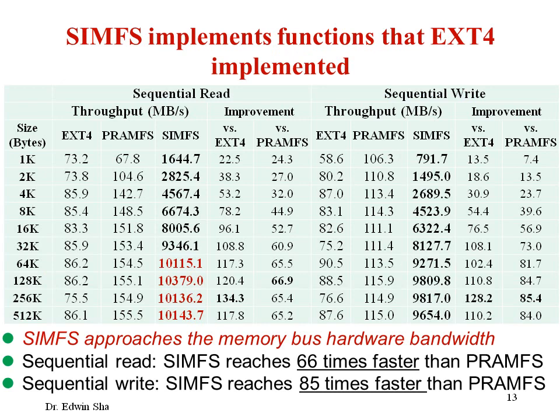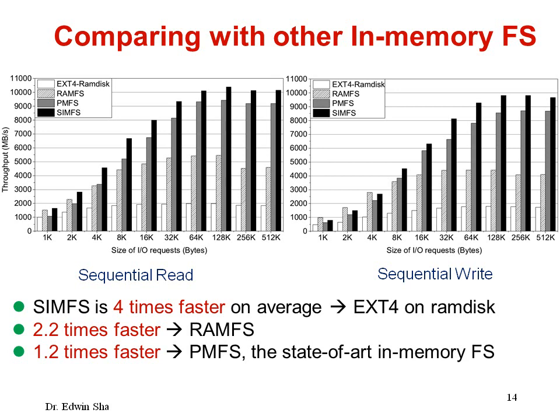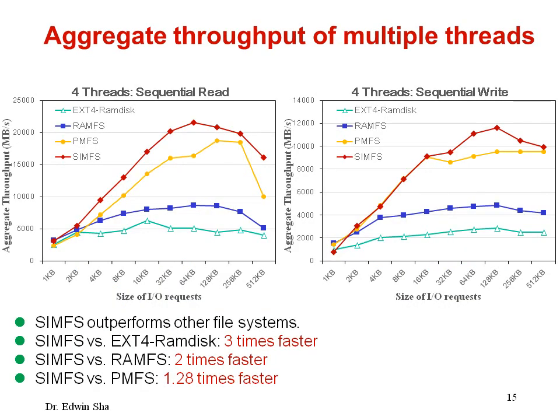Our CMFS implements functions that EXT4 has implemented, and our experiments show CMFS approaches the memory bus hardware bandwidth. Comparing with other in-memory file systems, CMFS outperforms all the others we compare with. CMFS is four times faster than EXT4 on RAM disk and two times faster than RAMFS. For multi-threaded workloads, we also have similar performance.